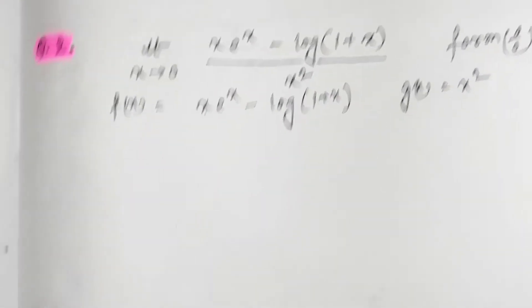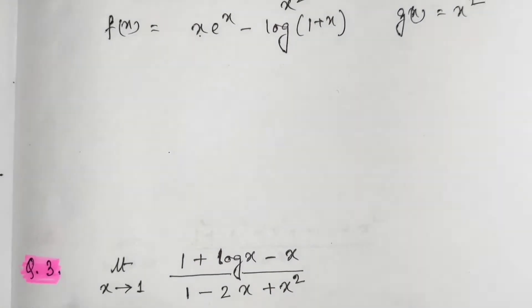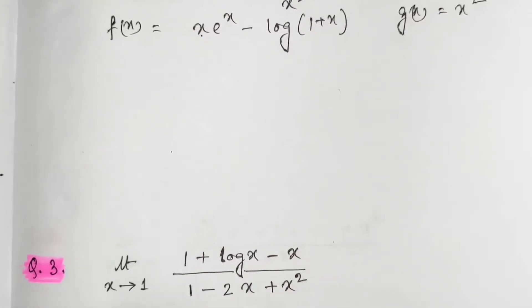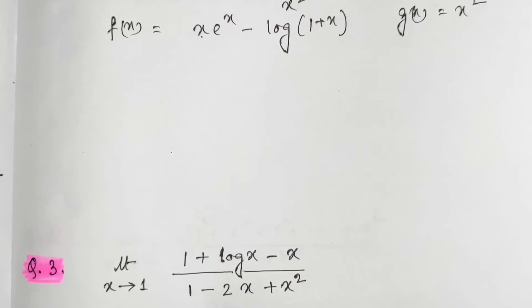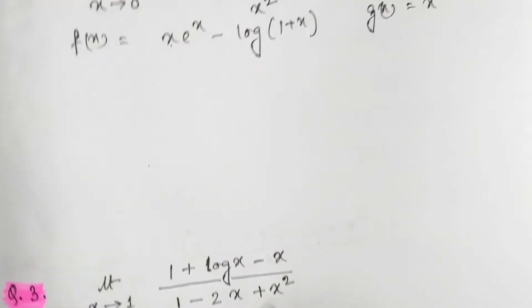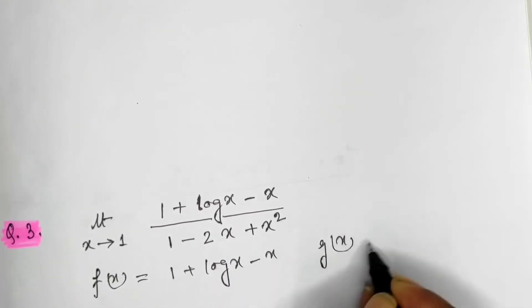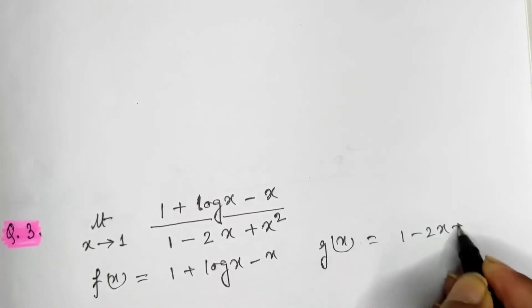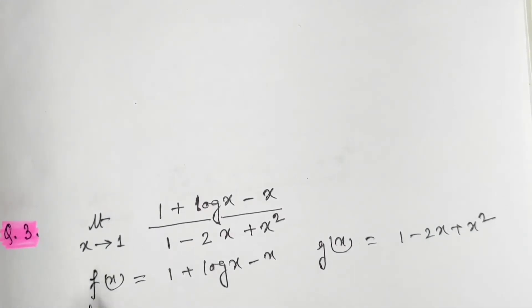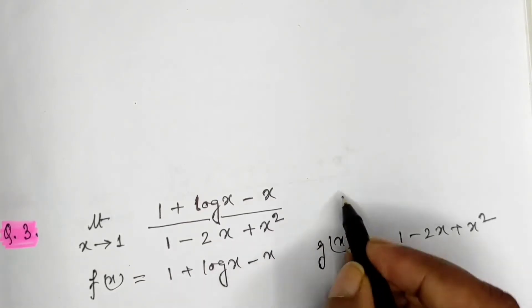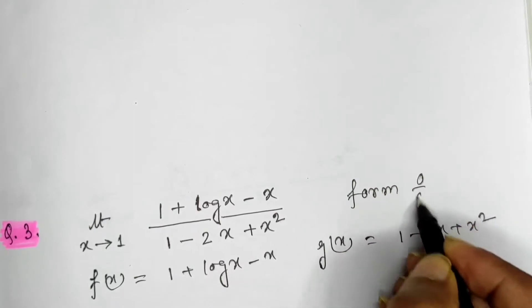Here is one more example with limit x tends to 1. Let f(x) = 1 + log x − x and g(x) = 1 − 2x + x². When we substitute x = 1, we find f(1) = 1 + log 1 − 1 = 0 and g(1) = 1 − 2 + 1 = 0. So this is also in the form of 0 by 0.